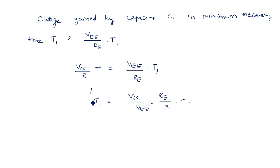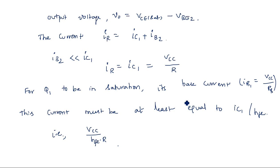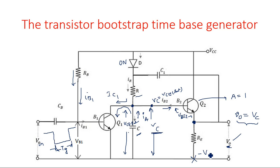So T1 equals VCC by VEE times RE by R times T. This is the amount of time taken by the capacitor to revert to its original value. A minus VEE supply needs to be applied at resistor RE in the emitter follower configuration so that the recovery process takes place. Therefore T1 equals VCC by VEE times RE by R times T. This concludes the topic of the bootstrap time-base generator.